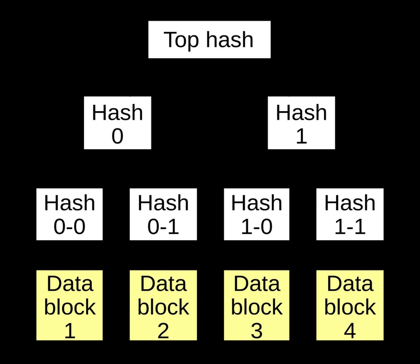The main difference from a hash list is that one branch of the hash tree can be downloaded at a time, and the integrity of each branch can be checked immediately, even though the whole tree is not available yet. For example, in the picture, the integrity of data block 2 can be verified immediately if the tree already contains hash 0-0 and hash 1, by hashing the data block and iteratively combining the result with hash 0-0 and then hash 1, and finally comparing the result with the top hash. Similarly, the integrity of data block 3 can be verified if the tree already has hash 1-1 and hash 0.